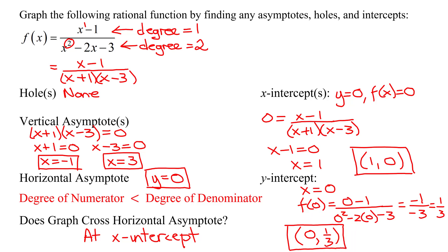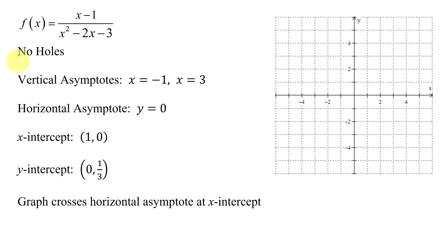Now I've found all that information and I need to graph my function. Starting by graphing the vertical asymptotes of x equals negative 1 and x equals 3. Remember, asymptotes are always graphed with dotted lines. There is the vertical asymptote of x equals negative 1, and there is the vertical asymptote of x equals 3.